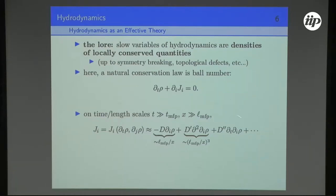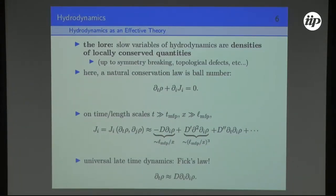Because the current comes with an extra index, we add derivatives to the density and write the current as a gradient expansion of the density — essentially a Taylor series in derivatives. This is an asymptotic series in general, but that doesn't mean it's not useful. The leading-order term in this series is given by a single diffusion constant multiplied by the gradient of the density in space. Combining these two equations, we predict that on long time and length scales the dynamics is completely universal and governed by the classical diffusion equation. On very long time and length scales, we want to treat rho as a classical degree of freedom.